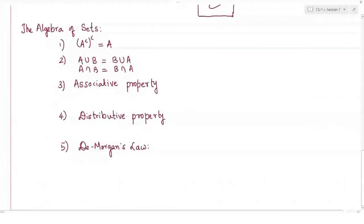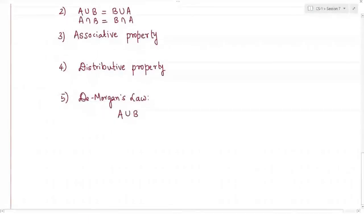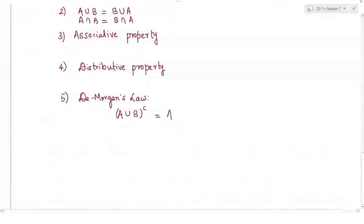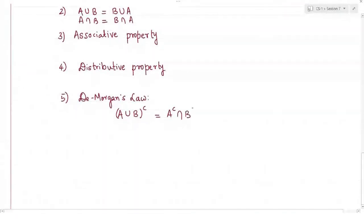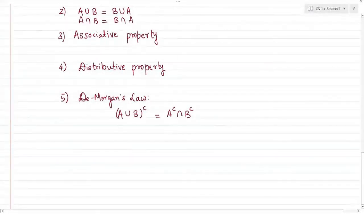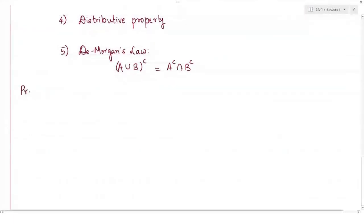There is also De Morgan's law, which you have extensively used in digital theory to reduce Boolean expressions and implement algebraic expressions using minimal gates. Applying De Morgan's law to a union: the complement of (A union B) equals A complement intersection B complement. Similarly, this can be written for intersection of A and B. This completes the set theory overview — a basic idea and starting point of probabilistic theory.